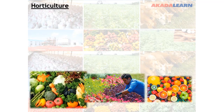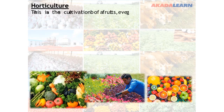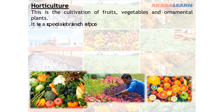Horticulture is the cultivation of fruits, vegetables, and ornamental plants. It is a special branch of crop science.